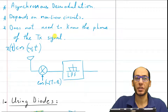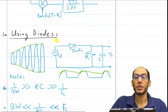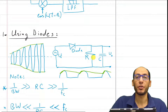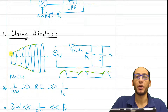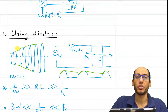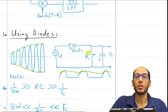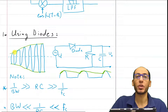Non-coherent demodulation is sometimes referred to as asynchronous demodulation. The first approach uses diodes and RC circuits. Given an amplitude modulated input signal where the amplitude of the carrier frequency carries the information, we pass the signal through a diode and then through an RC circuit, taking the output over the capacitor.